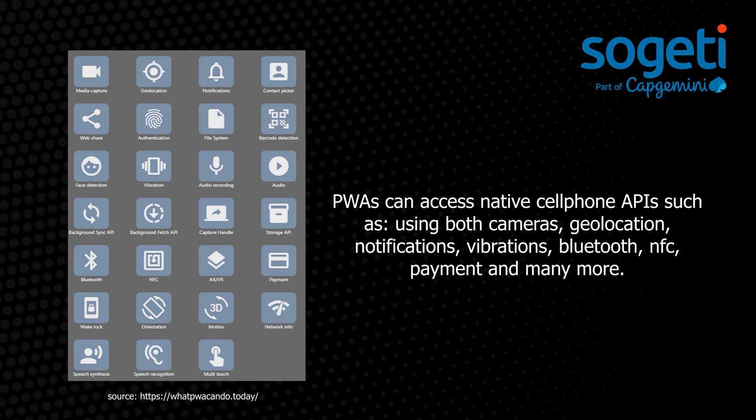PWAs can access native cell phone APIs such as using both cameras, geolocation, notifications, vibrations, Bluetooth, NFC, payment, and many more.